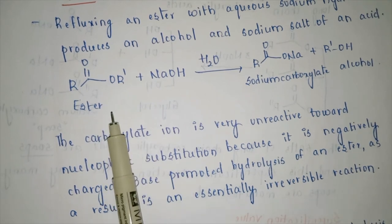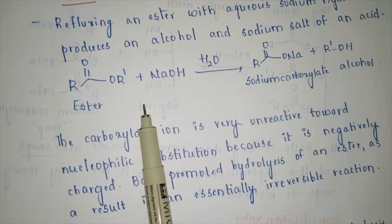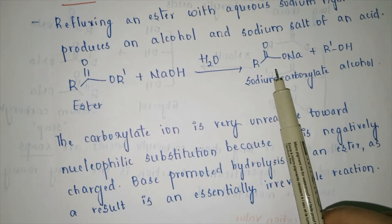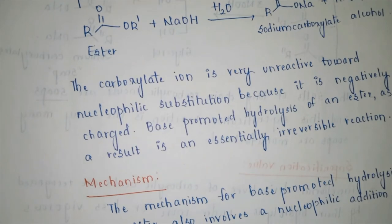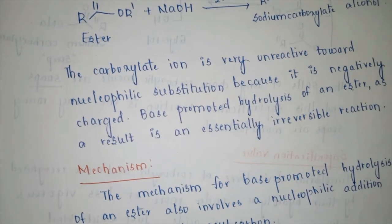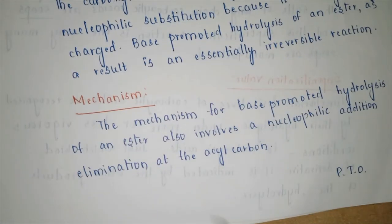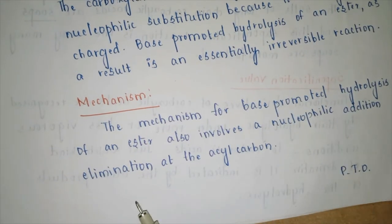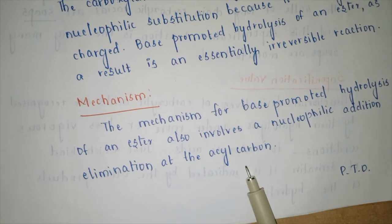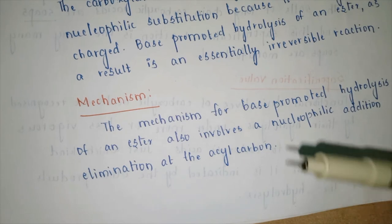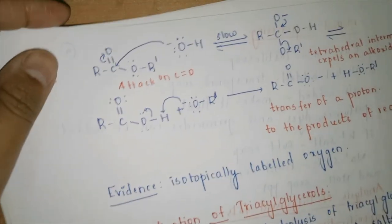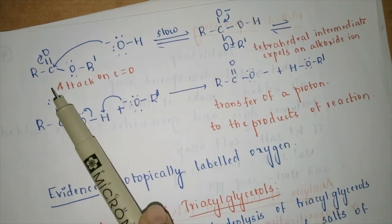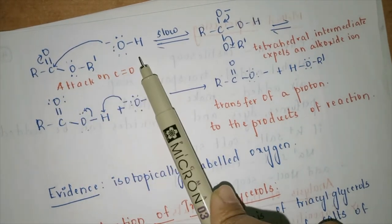The hydrolysis of an ester with NaOH is essentially irreversible — once the ester reacts with NaOH we cannot do a reversible reaction because the carboxylate product is very unreactive towards nucleophilic substitution (the negative charge delocalizes between the two oxygens). The mechanism for base-promoted hydrolysis of an ester involves nucleophilic addition–elimination at the acyl carbon.